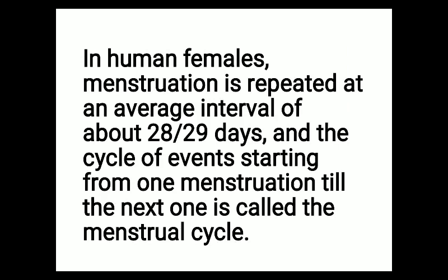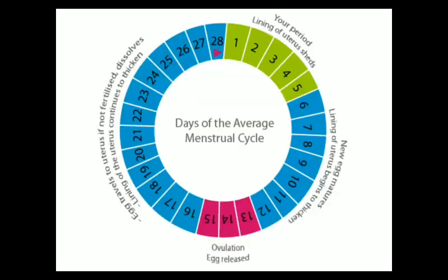In human females, menstruation is repeated at an average interval of about 28 to 29 days, though this will vary from person to person. The cycle of events starting from one menstruation till the next is called the menstrual cycle - an around 28-day reproductive cycle occurring in the human female.